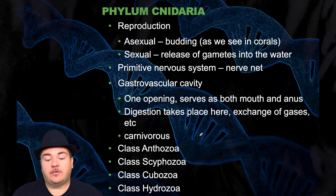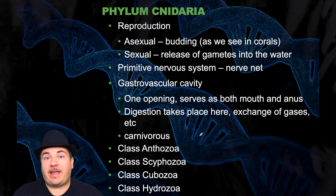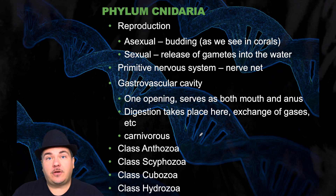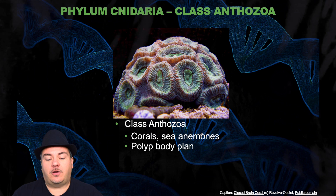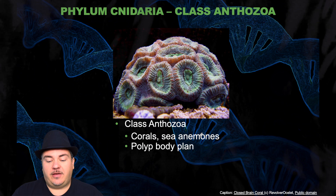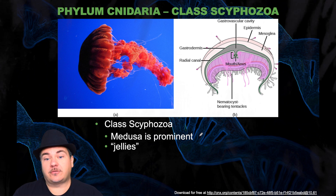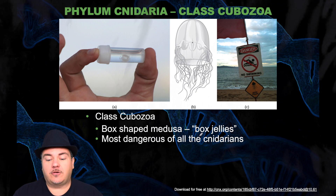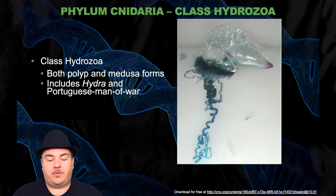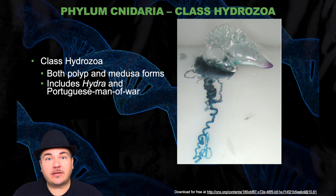Cnidarians have a very primitive nervous system called the nerve net. They have a gastrovascular cavity with one opening that serves both as mouth and anus — digestion and gas exchange take place here. They're carnivorous. There are four classes: Anthozoa — corals and sea anemones with a polyp body plan; Scyphozoa — the medusa is the prominent stage, these are what you typically think of as jellyfish or jellies; Cubozoa — box-shaped medusae or box jellies, the most dangerous cnidarians, capable of causing serious harm or death; and Hydrozoa, which have both polyp and medusa forms, including hydra and the Portuguese man-of-war.